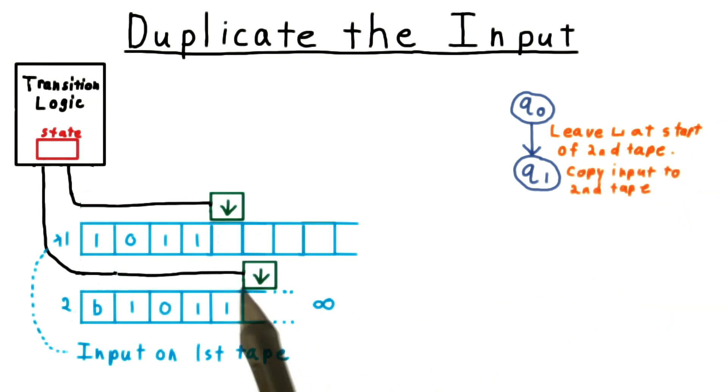Next, we walk forward on both tapes, copying the contents of the first tape to the second. Once we hit a blank symbol on the first tape, we stop.